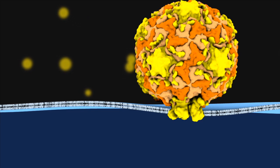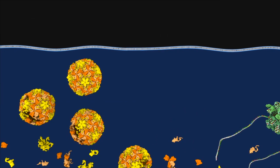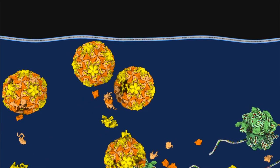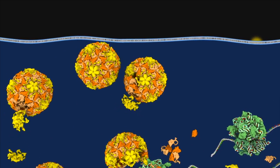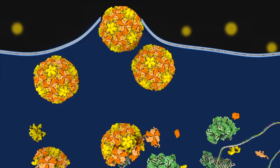They bind to a cell and inject their genetic code inside. The invaded cell treats this code as its own and starts making virus protein components to build new viruses. When enough viruses have been assembled, they burst through the cell membrane and the whole process starts again.